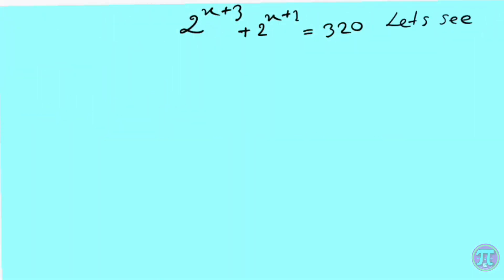Welcome. Let's see the solution of this equation: 2^(x+3) + 2^(x+1) = 320. Let's solve it step by step.